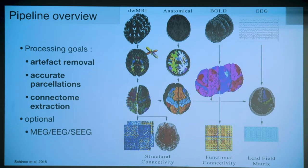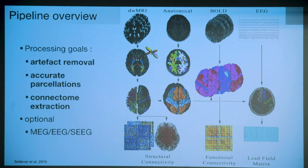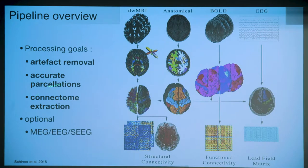You can also get functional connectivity - for example, pairwise correlations of region time series. And if you're interested in EEG, MEG, or sEEG, there are several methods to compute lead field matrices, which give you the mapping of any dipole on the cortical surface onto the sensors on the scalp. The fundamental requirement for TVB to work is structural connectivity. Functional connectivity is used to compare simulated data to empirical data, but structural connectivity is really the core. I'll briefly cover artifact removal, parcellation, connectome extraction, and then show the HBP Collaboratory pipeline.